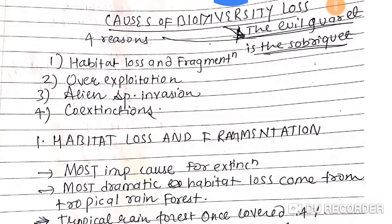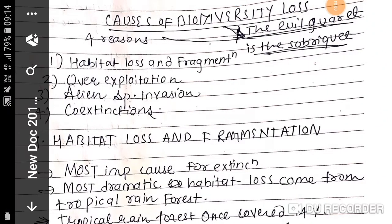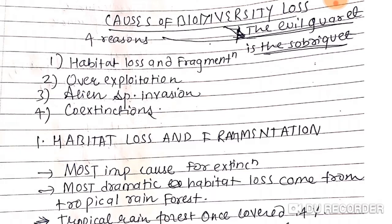In this video, we will see the causes of biodiversity loss. The causes of biodiversity loss are because of four reasons, and these four reasons are known as the 'evil quartet' — a sobriquet for the four factors which cause biodiversity loss.